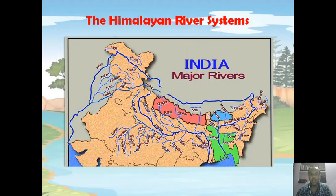The Himalayan river systems. We broadly classify the Himalayan river systems into three categories: number one, the Indus river system; number two, the Ganga river system; and number three, the Brahmaputra river system.